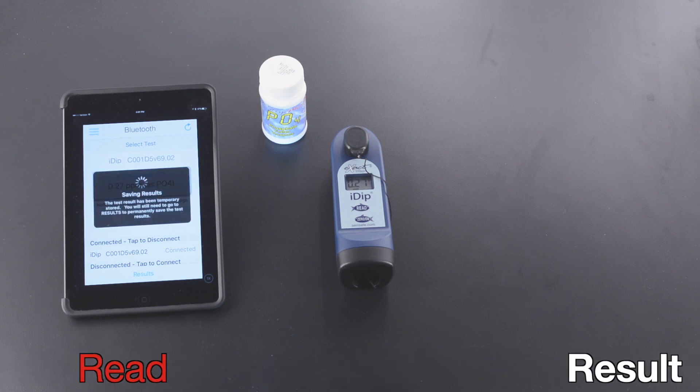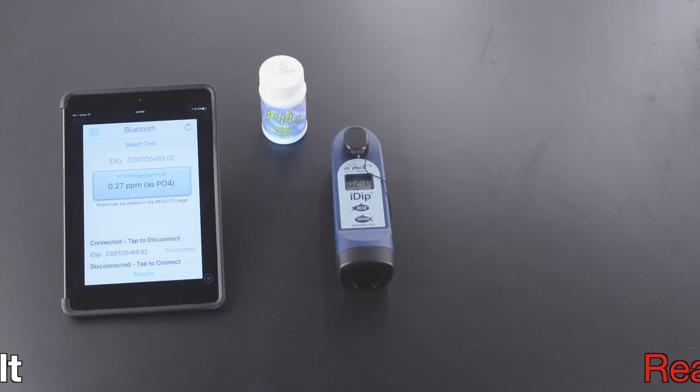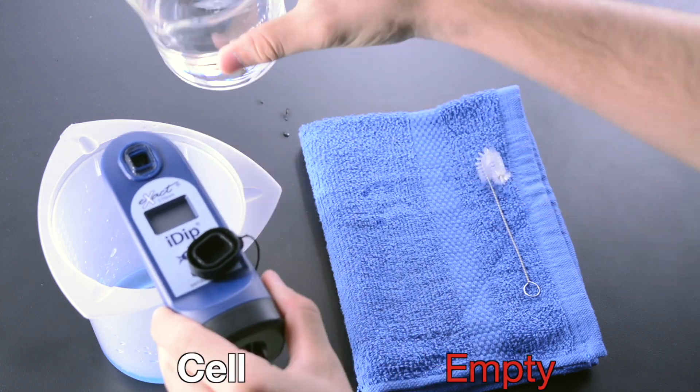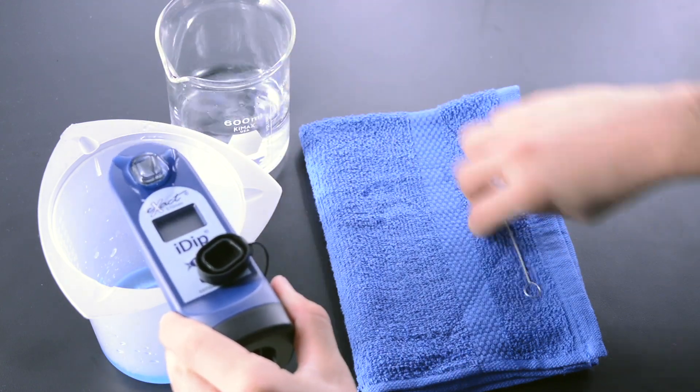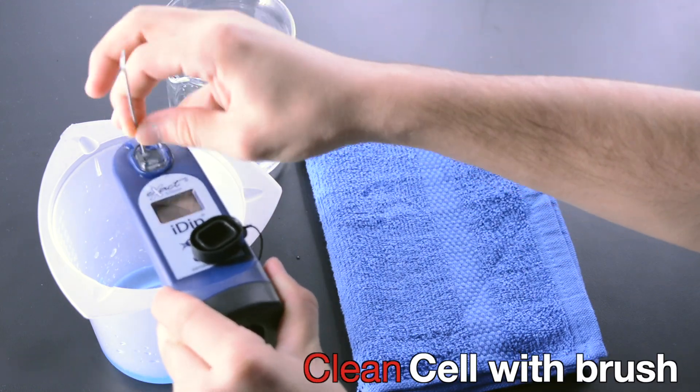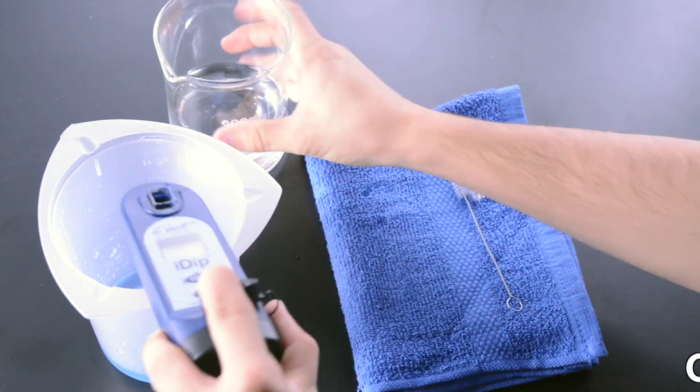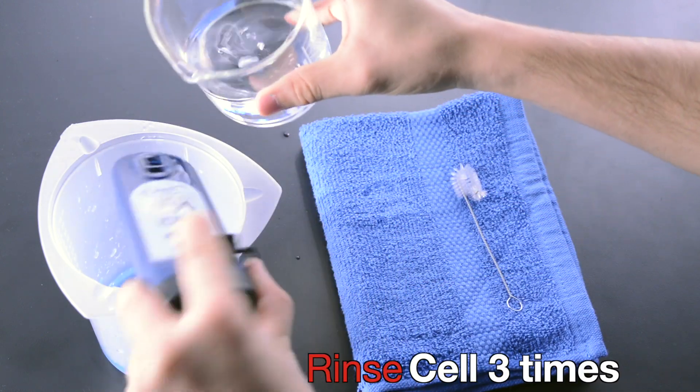Read the result, then empty the cell. Clean the cell with a brush and rinse it three times.